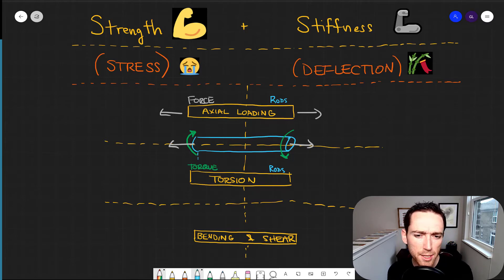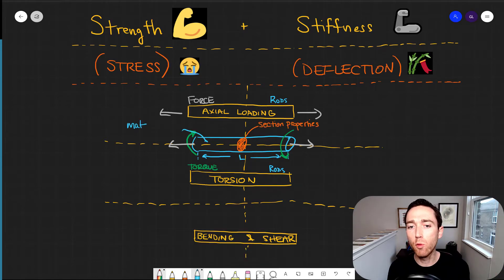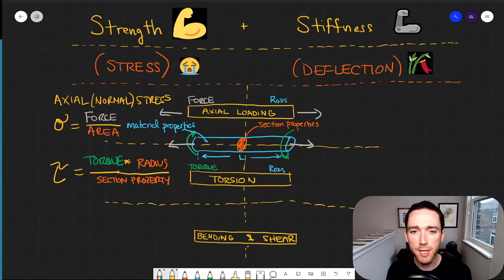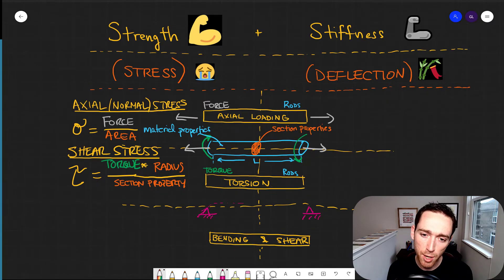In the second modality we're torquing or twisting. And so as we move from a one dimensional axial loading case to a two dimensional torque loading case, you can see that all we're doing is we're taking the force information and combining it with the section property information or the geometry information.